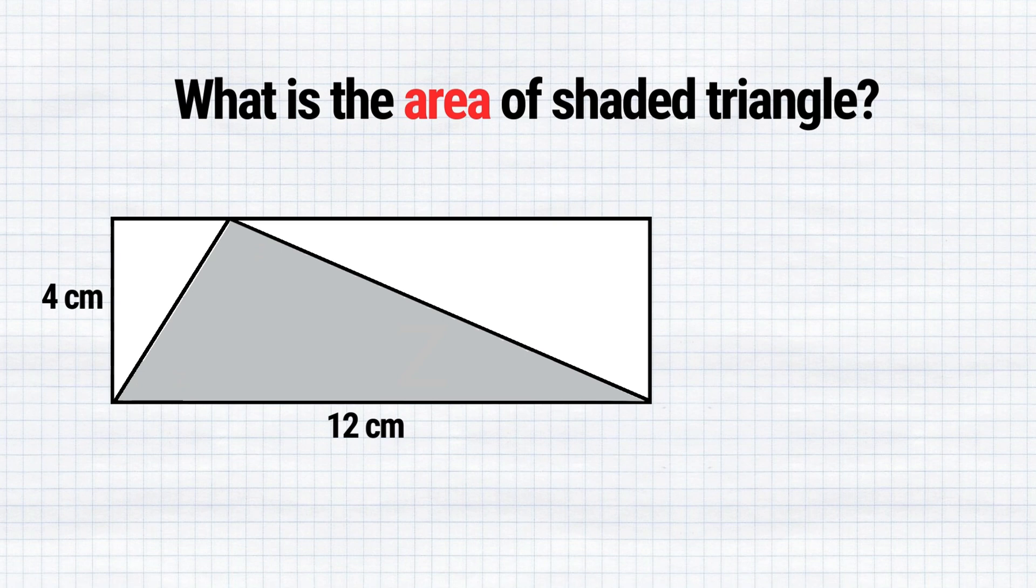To begin with, take a closer look at our figure. You see that two vertices of our triangle align with two vertices of a rectangle. It means that the triangle's area will be exactly half of the rectangle's area.